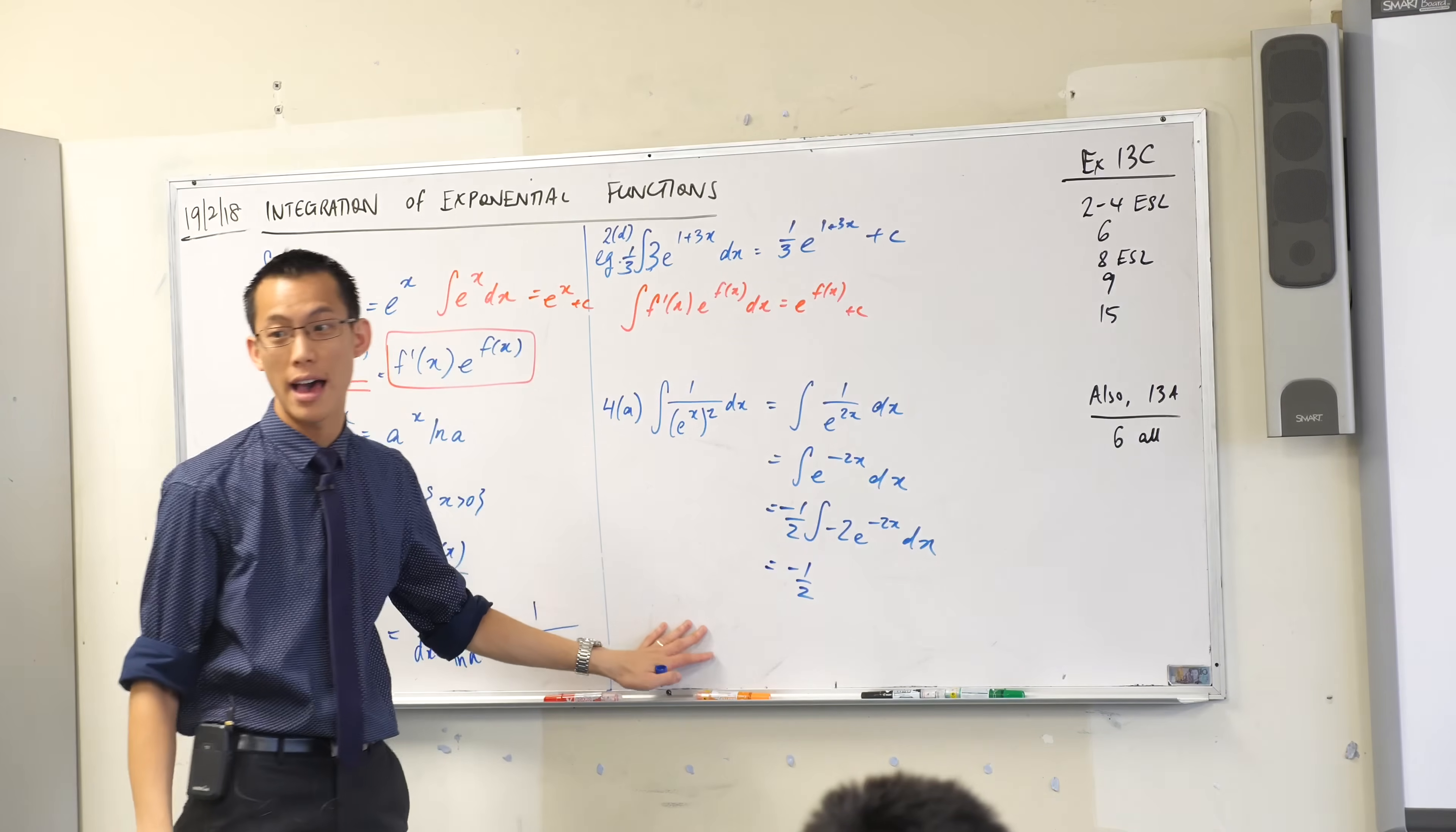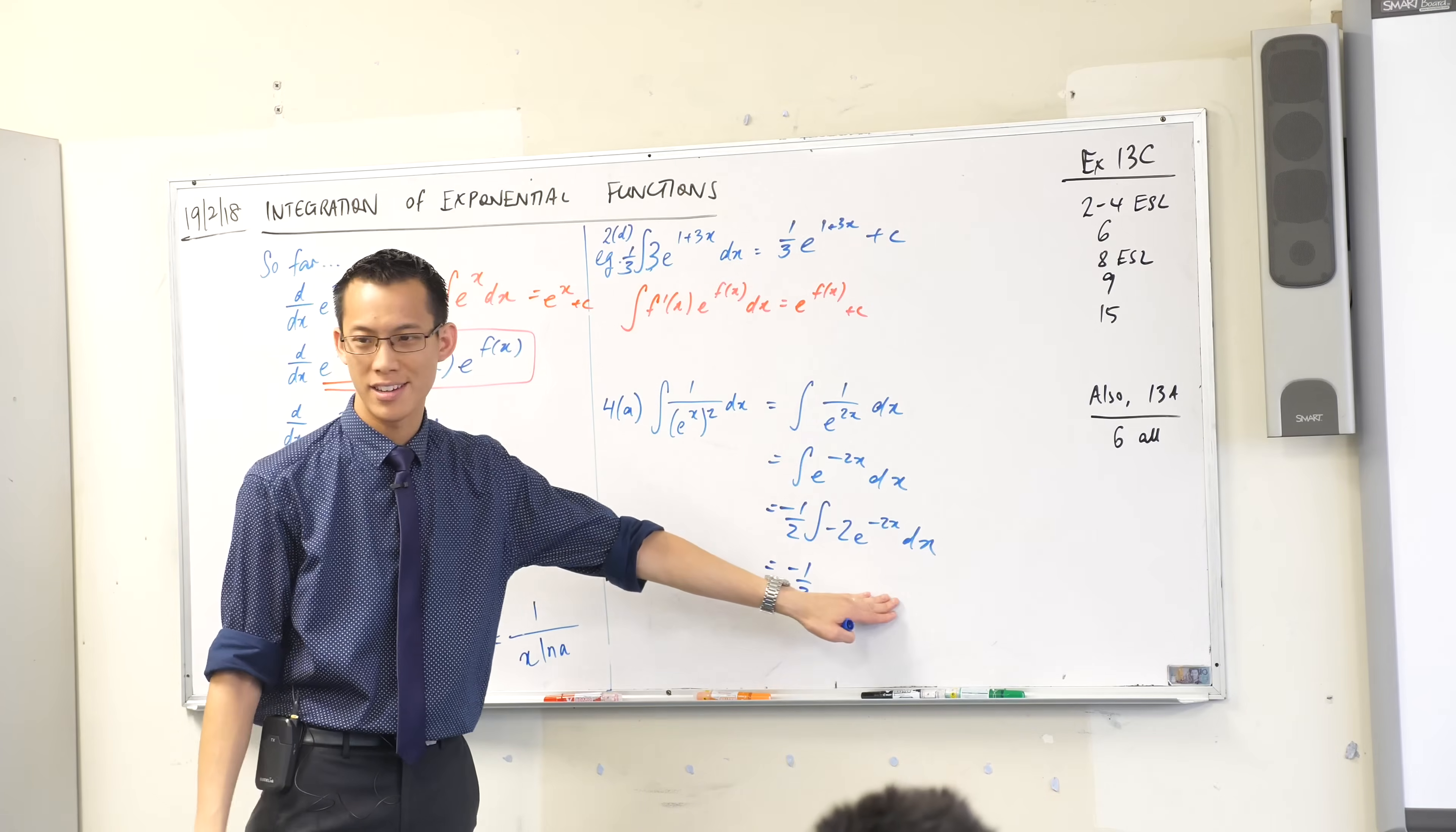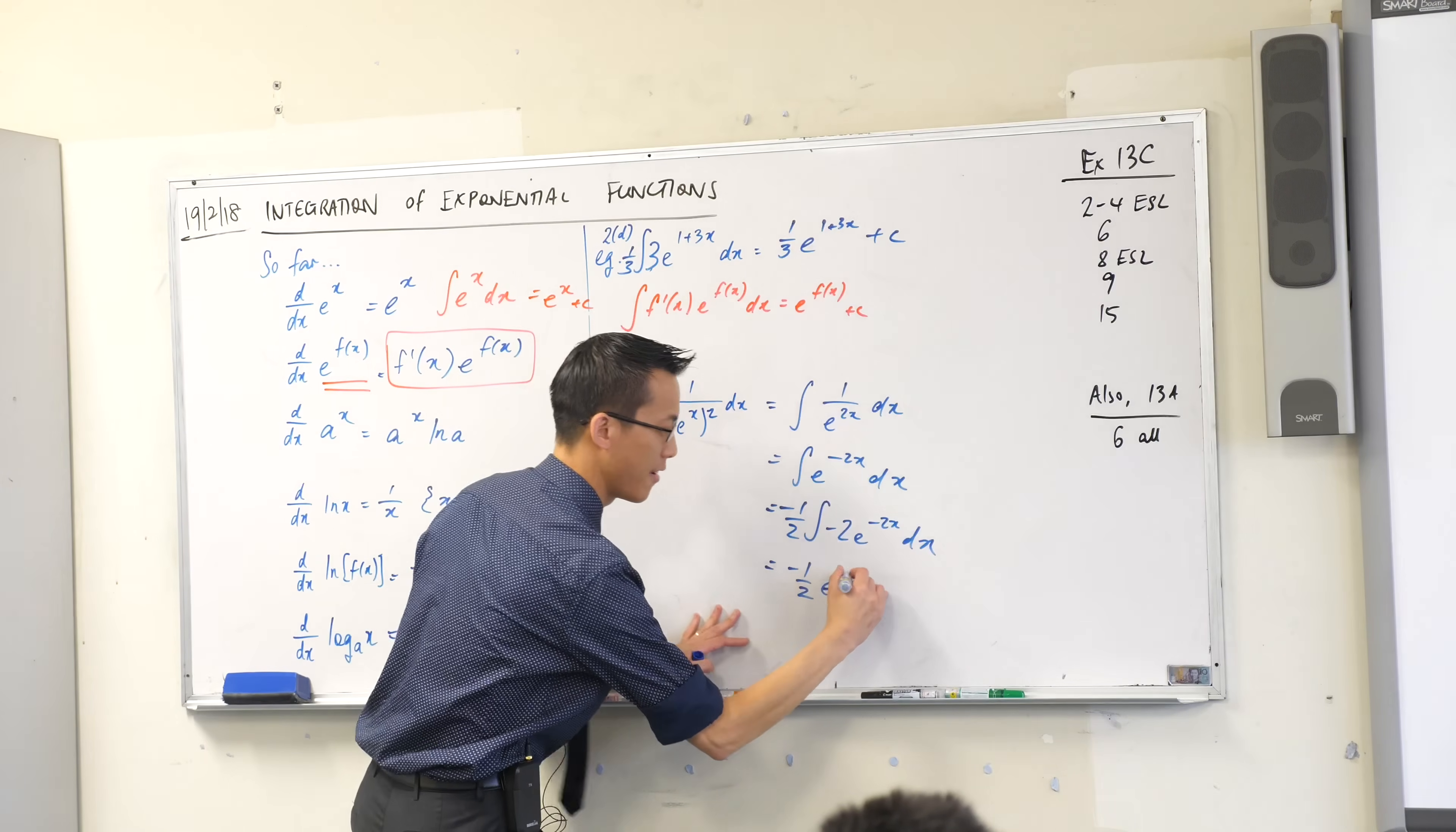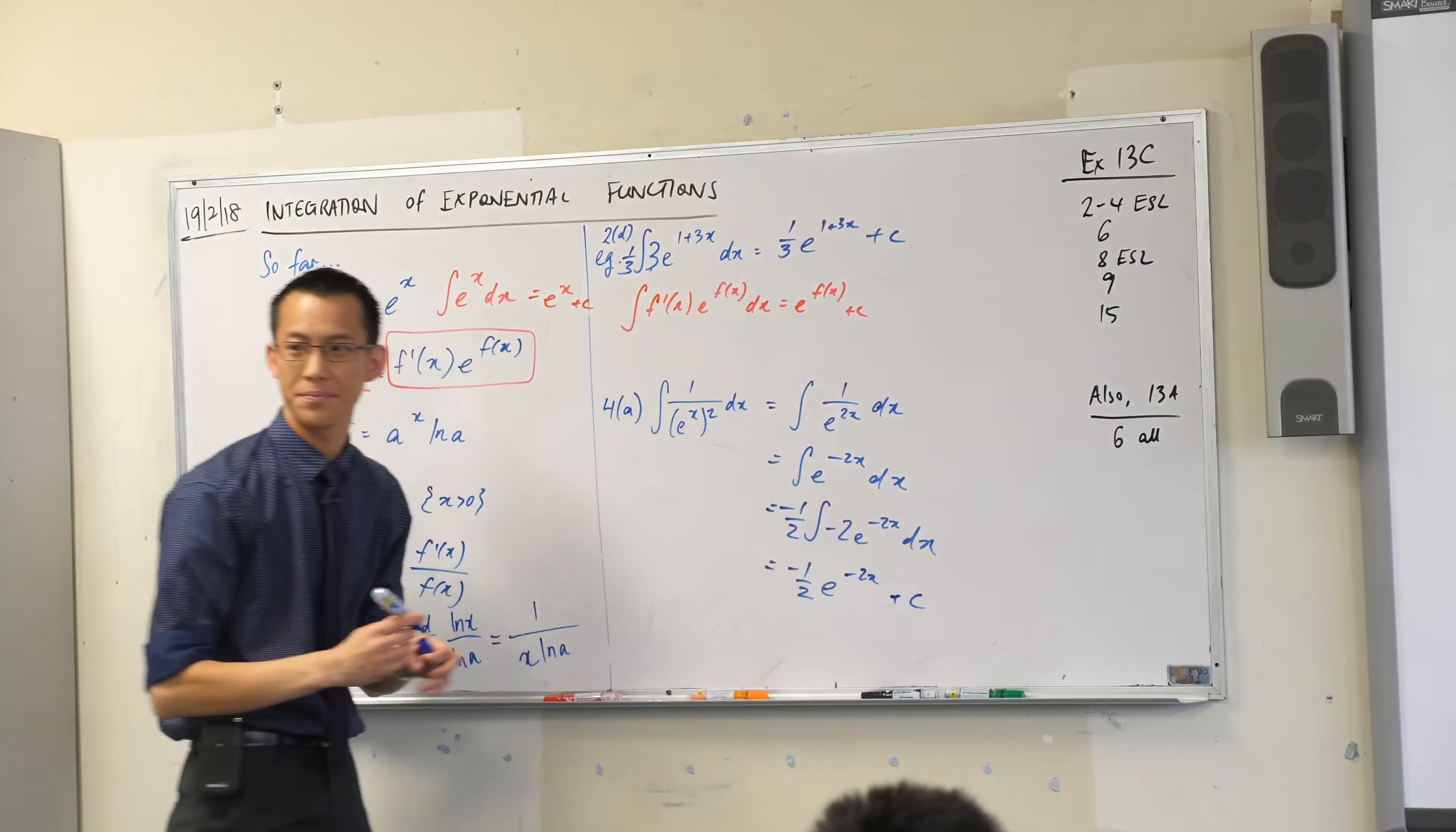The negative a half is outside the process of integration so that's why it remains untouched. What do you end up with once you're integrating? E to the, say it again Erica. Very good. There's that e to the f plus my c. Very good.